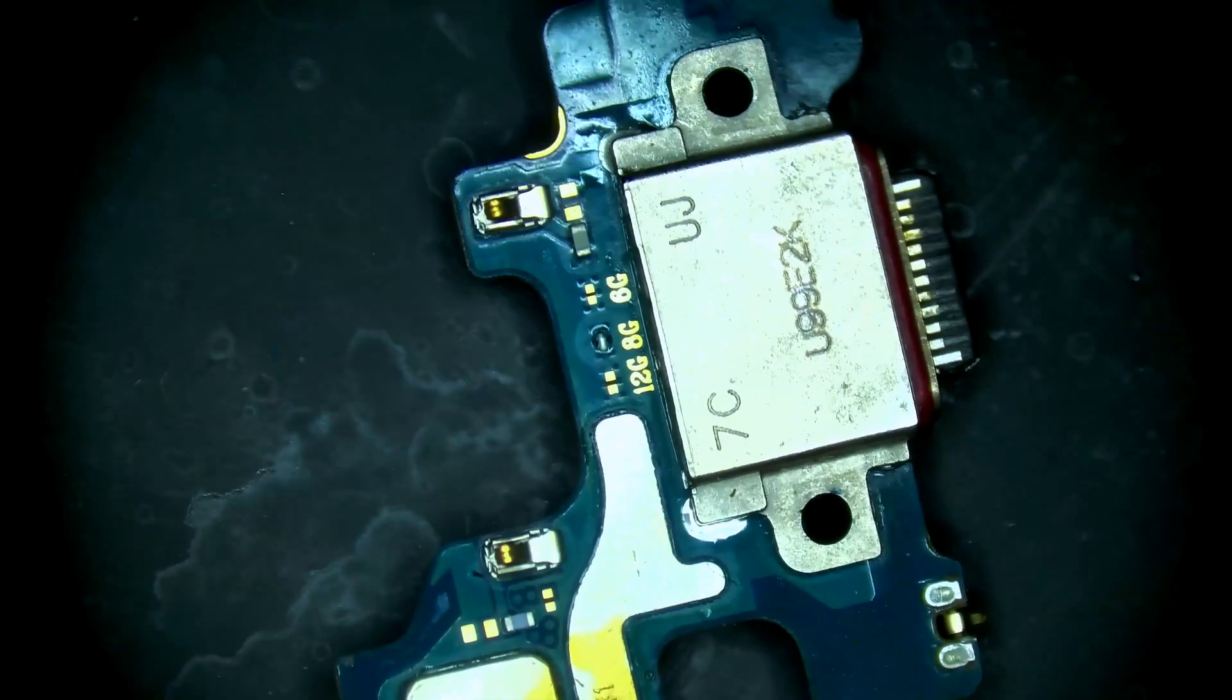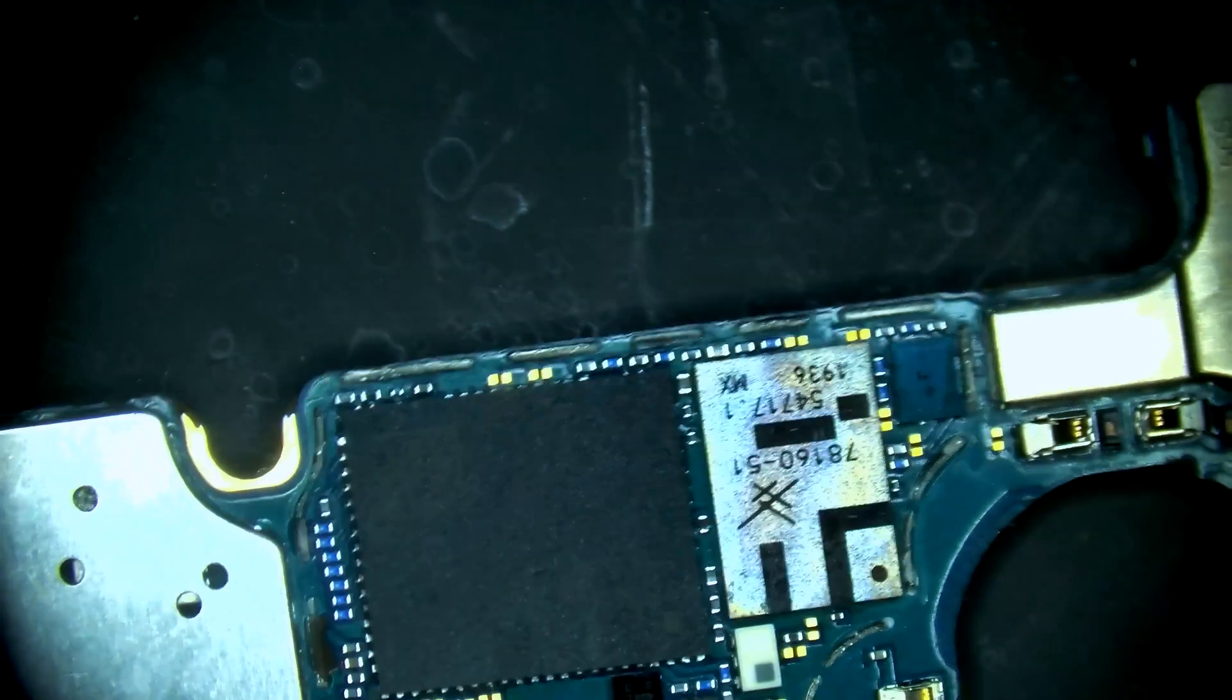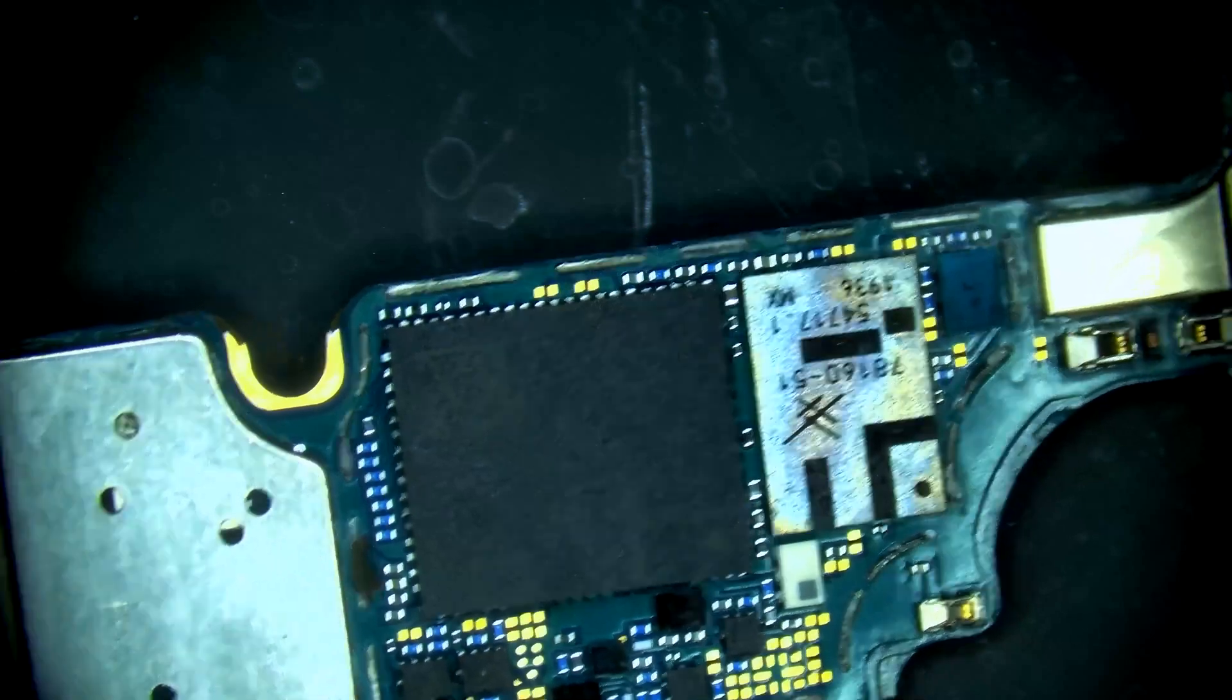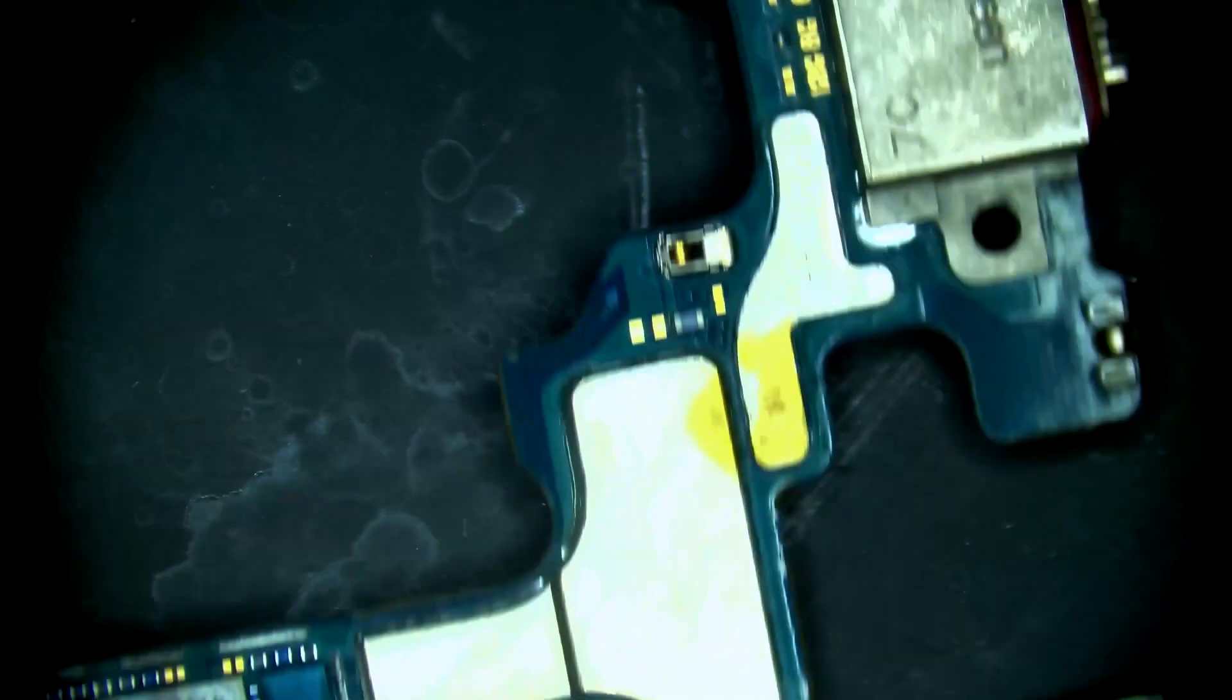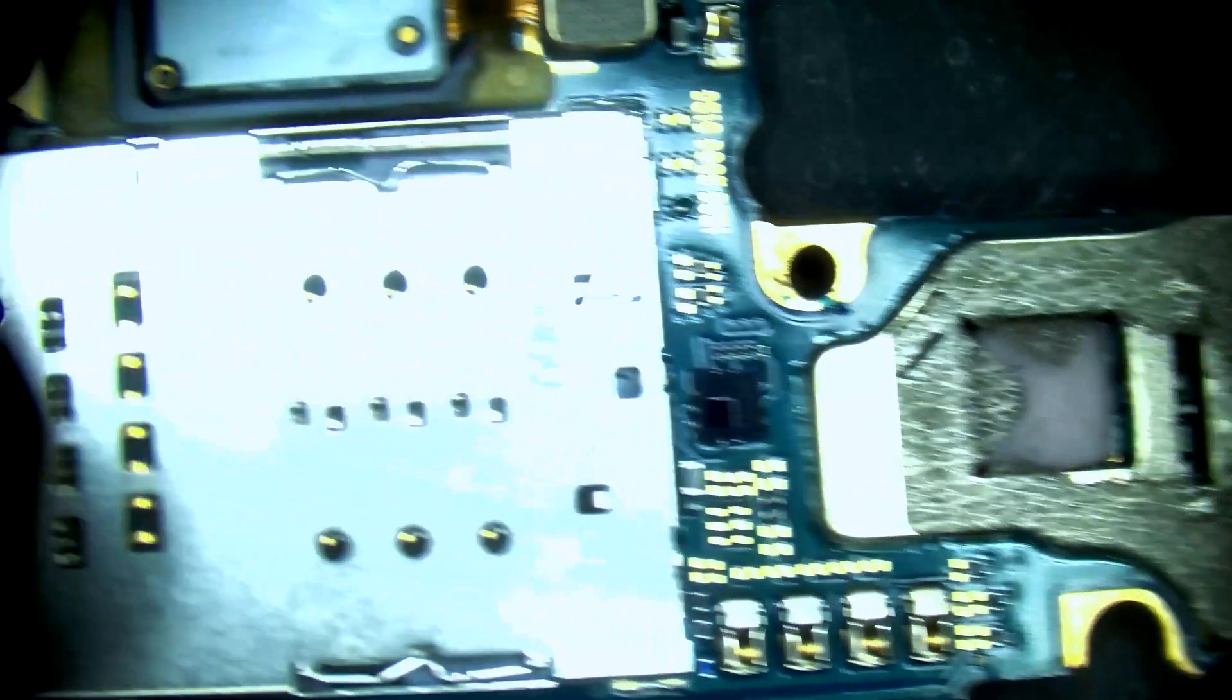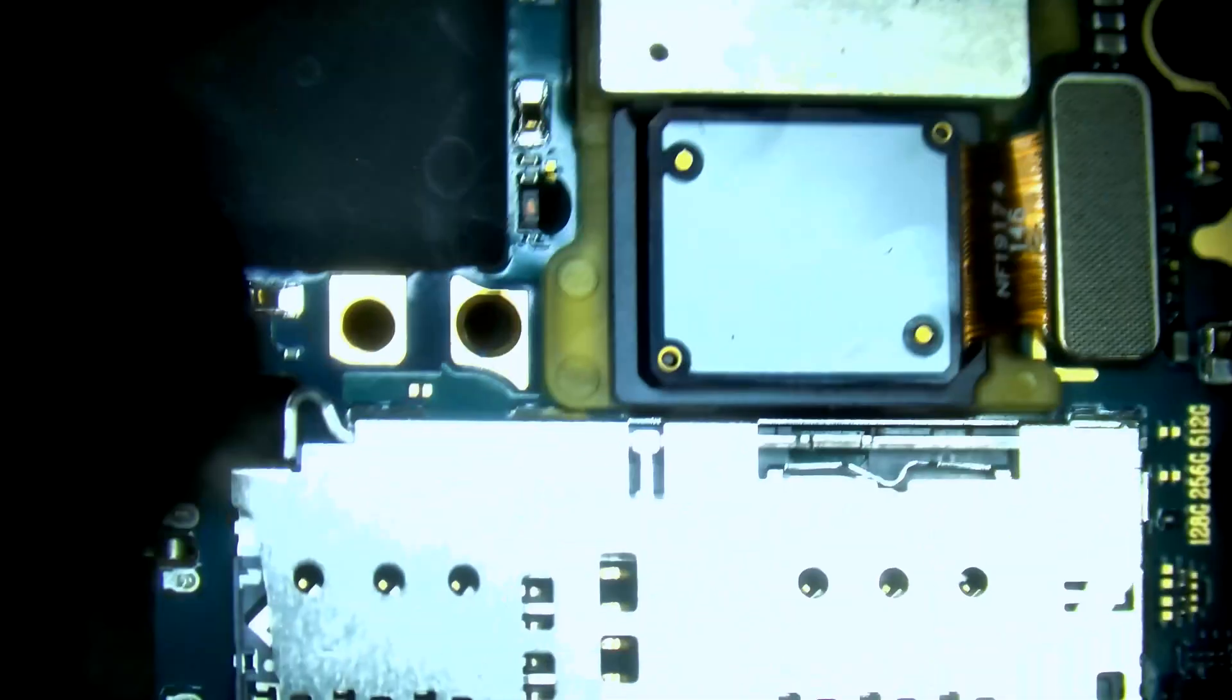Looks like someone already pulled this shield. Now it doesn't look like there's any real corrosion. I have to check the notes to see if we did this or if this was a prior repair attempt because someone's definitely been here before.